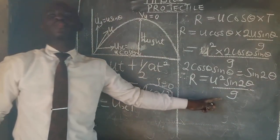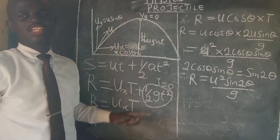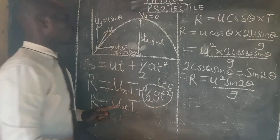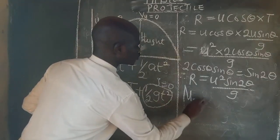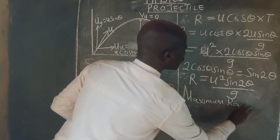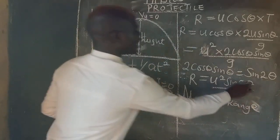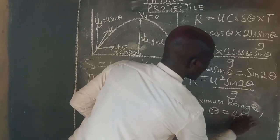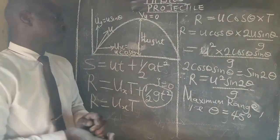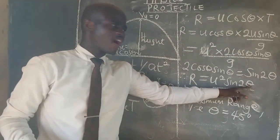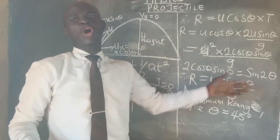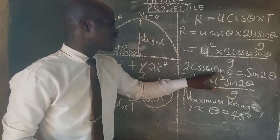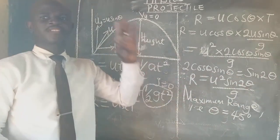This is the formula to calculate the horizontal distance covered when a projectile is projected. Maximum range occurs when the angle of projection theta equals 45 degrees, because sin(2 × 45°) = sin 90° = 1, which gives the maximum value. Any angle greater than or less than 45 degrees will not give the maximum range.